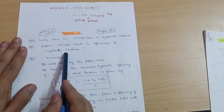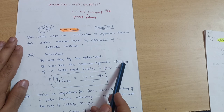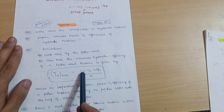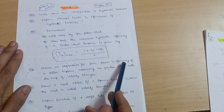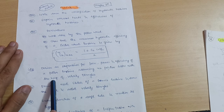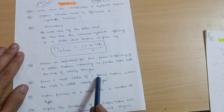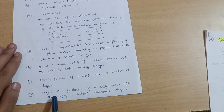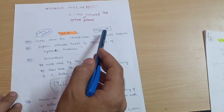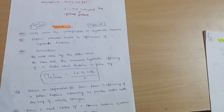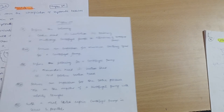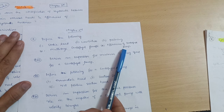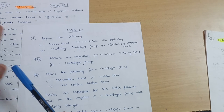Derivations to cover include: work done by the Pelton wheel; show that the maximum hydraulic efficiency of a Pelton wheel turbine is η_max = (1 + C_b · cos β) / 2; and the expression for force, power, and efficiency of a Pelton turbine assuming no friction losses, with the help of velocity triangles. Next: draw a neat sketch of a Francis turbine and draw inlet and outlet velocity triangles; explain the function of a draft tube; explain the functioning of a Kaplan turbine with the help of a sectional arrangement diagram. From the second chapter of Module 4: define static head, cavitation, priming, multi-stage centrifugal pumps, and efficiencies of centrifugal pumps. Also derive an expression for minimum starting speed for a centrifugal pump — this is a super important question.